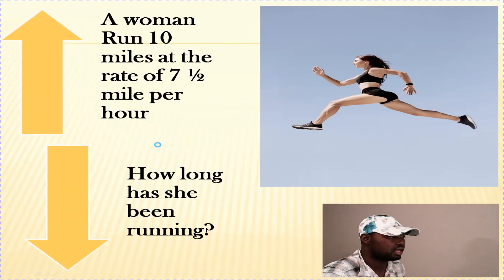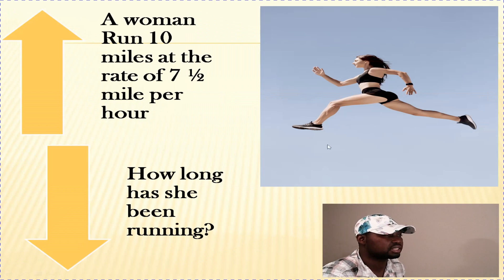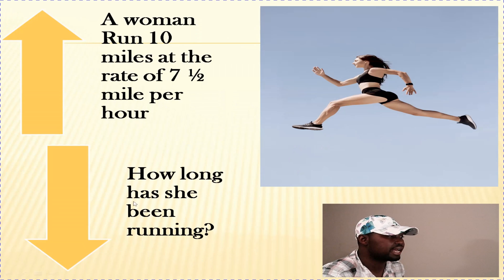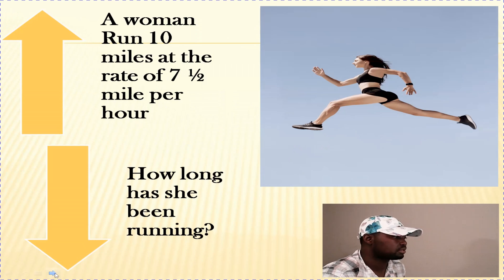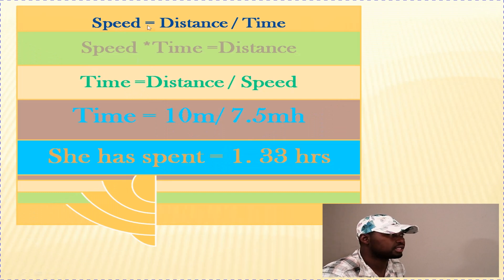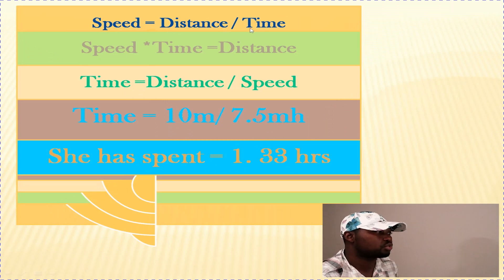Exercise number three: a woman runs 10 miles at the rate of 7.5 miles per hour. How long has she been running? To know how long she has been running, we have to use the formula for speed. Speed, as we know, equals distance over time. We have to change the subject of the formula because we are looking for time.